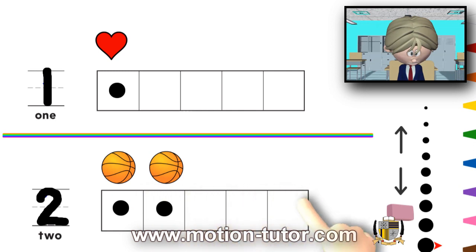So, remember, this 5 frame helps us visualize what numbers look like. And here is 1 and 2. So, 2 spaces taken in this 5 frame.